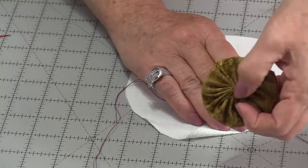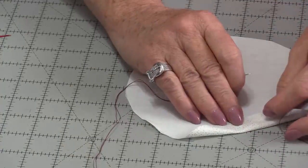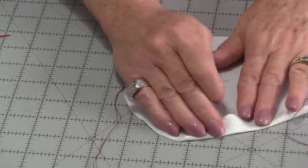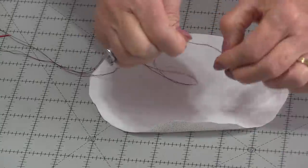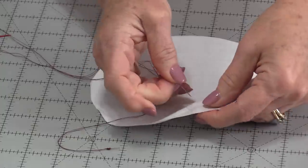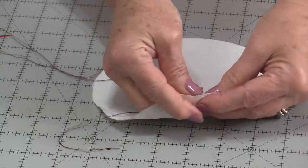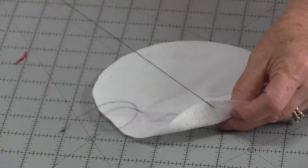That folded edge is going to be this inside. We don't have to have an exact quarter-inch. Whatever you're comfortable moving in will work fine. I want to hide my knot so I'm going to put it through the top of the fabric within that quarter-inch seam.